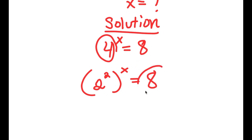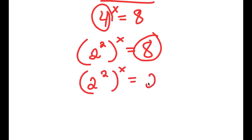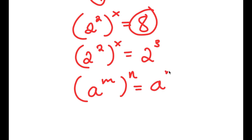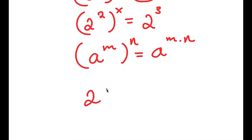And now 8 is the same thing as 2 to the power of 3, so I'm going to replace 8 with 2 to the power of 3. So I have 2 squared to the power of x is equal to 2 to the power of 3. If I have something in the form a to the power of m to the power of n, this equals a to the power of m times n. So 2 squared to the power of x equals 2 to the power of 2x.